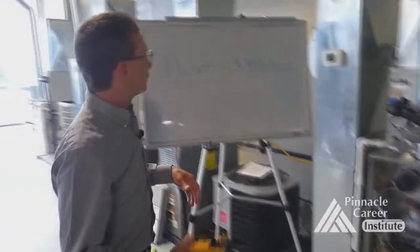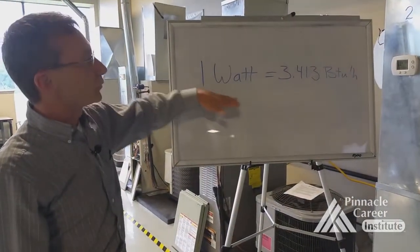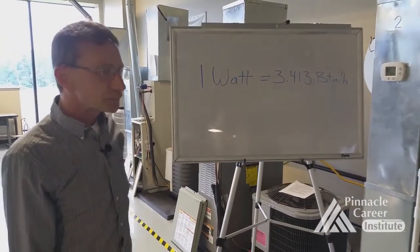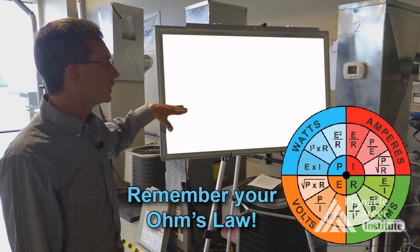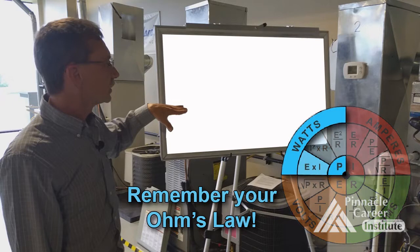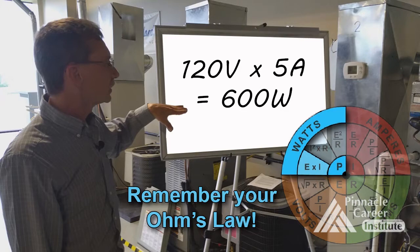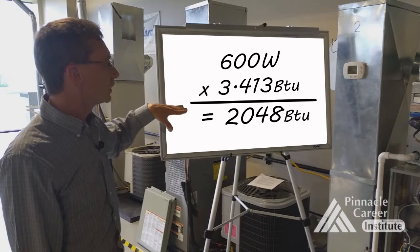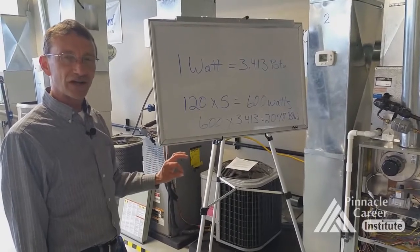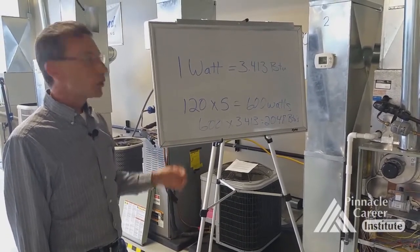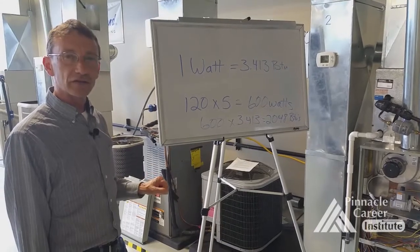All we need to do is multiply 120 times 5. After we do that, we know that 1 watt equals 3.413 BTUs. We took the amp draw, and we know that the blower was drawing about 5 amps at 120 volts. 120 volts times the 5 amps gives us 600 watts. So we would take 600 times 3.413 BTUs per watt. That gives us an additional load of about 2,048 BTUs.